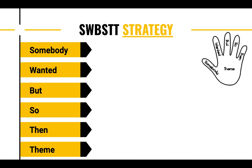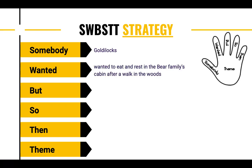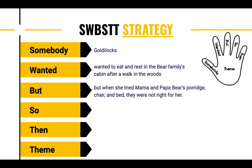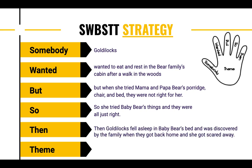All right, so if you are here, that means you already wrote your summary and you're ready to see mine. So, somebody is Goldilocks — she's the main character. She wanted to eat and rest in the bear family's cabin after a walk in the woods. But when she tried Mama and Papa Bear's porridge, chair, and bed, they were not right for her. So she tried Baby Bear's things and they were all just right. Then Goldilocks fell asleep in Baby Bear's bed and was discovered by the family when they got back home, and she got scared away. Goldilocks learned not to take things that don't belong to you. This is one of those themes that was inferred — it didn't straight up say it in the story. There are many themes in the story, and you might have thought of a few other themes, and that's okay.